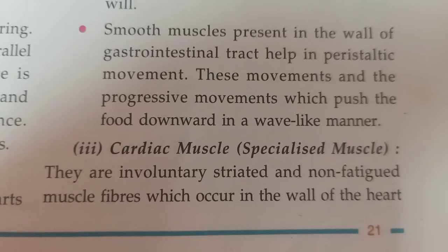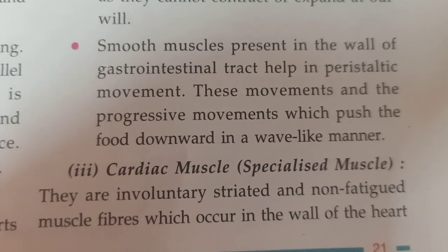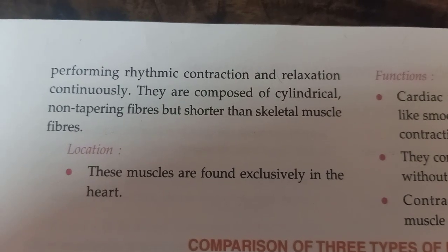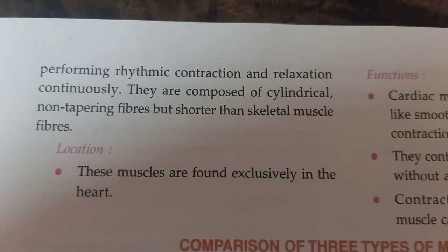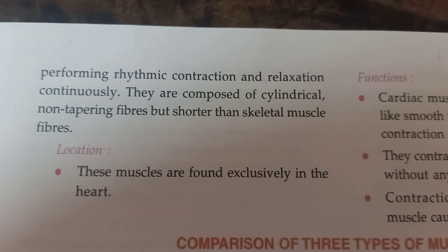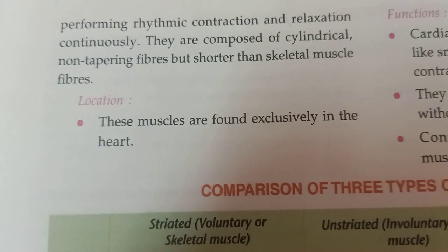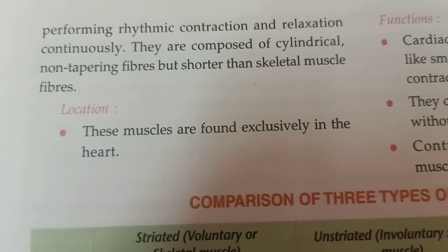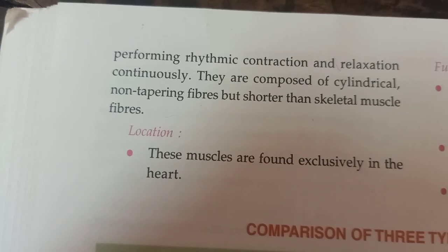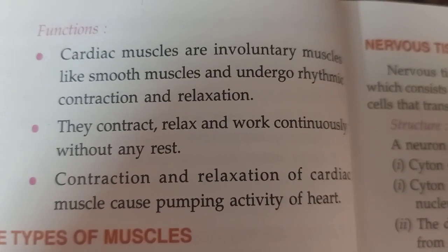The third type is cardiac muscles, also called specialized muscles. They are involuntary, striated, and non-fatigued muscle fibers which occur in the wall of the heart, performing rhythmic contraction and relaxation continuously. They are composed of cylindrical, non-tapering fibers but are shorter than skeletal muscle fibers. These muscles are found exclusively in the heart.